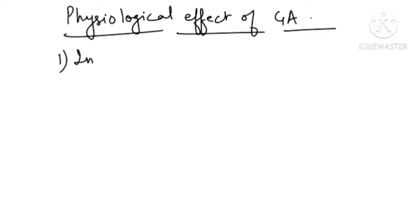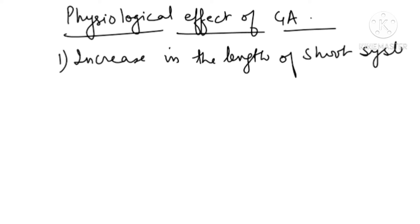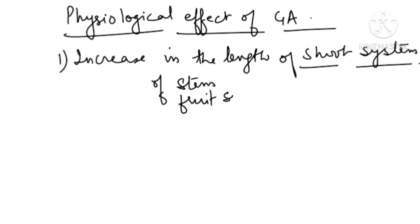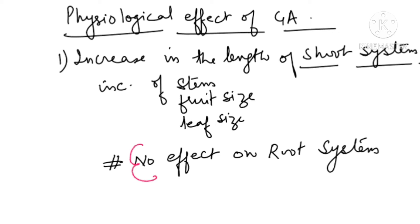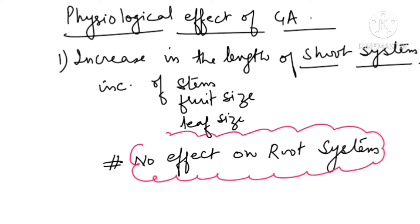The first physiological effect is an increase in the length of the stem — specifically the shoot system. Gibberellins are not effective in the root system; they show their effect only in the shoot system. They can also increase fruit size and leaf size. There is no effect on the root system.